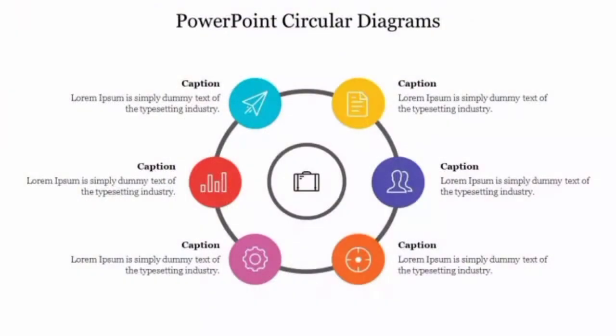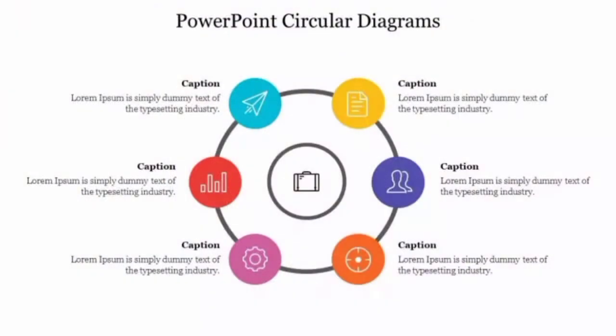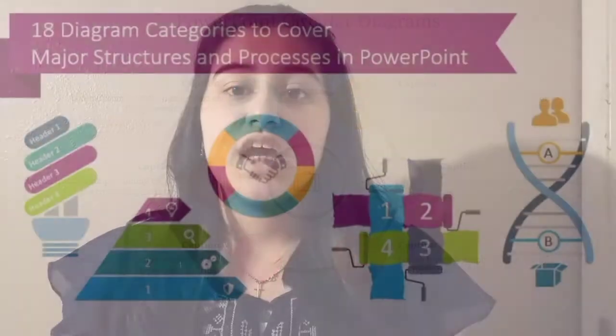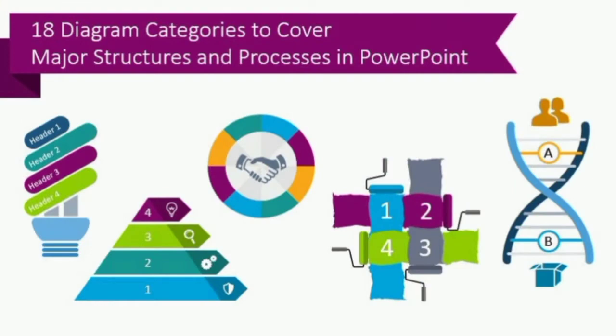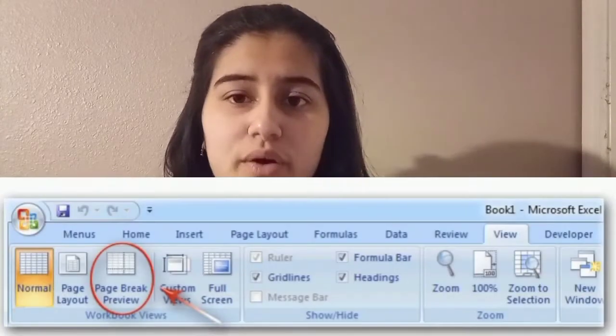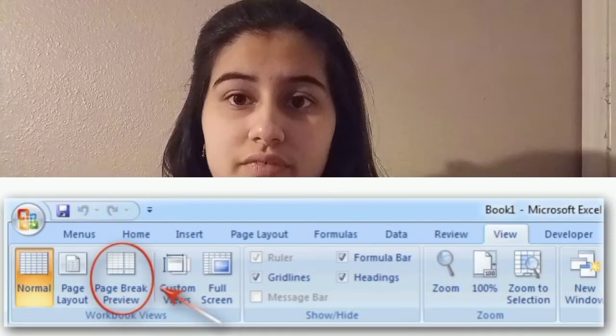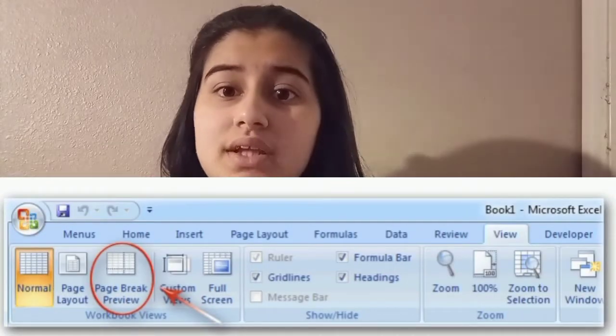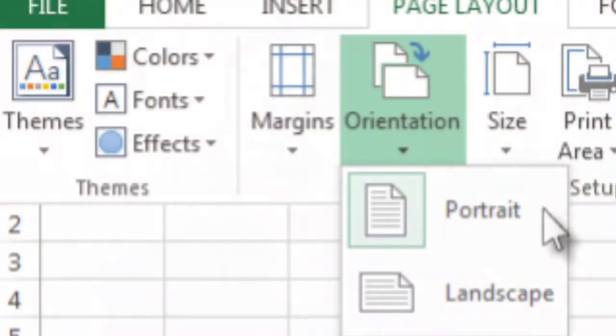What is a diagram? It's a visual representation of data to help readers better understand relationships among data. What is Page Break Preview? It displays the location of the different page breaks within the worksheet.